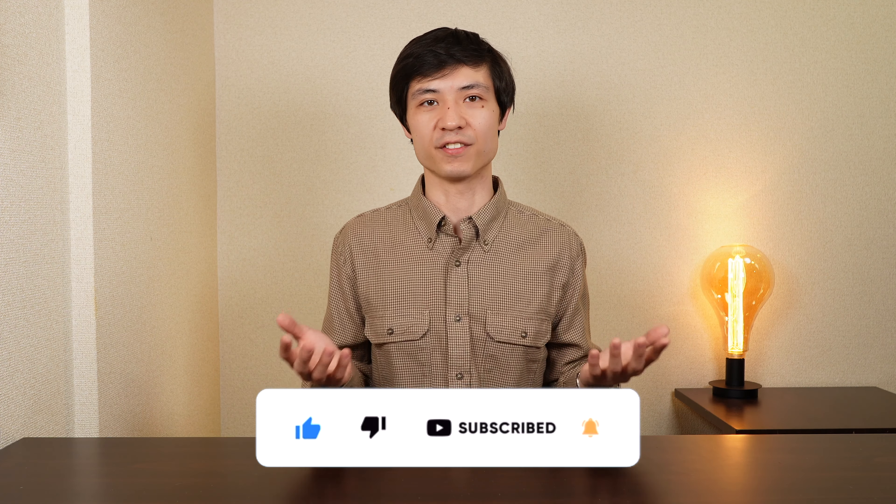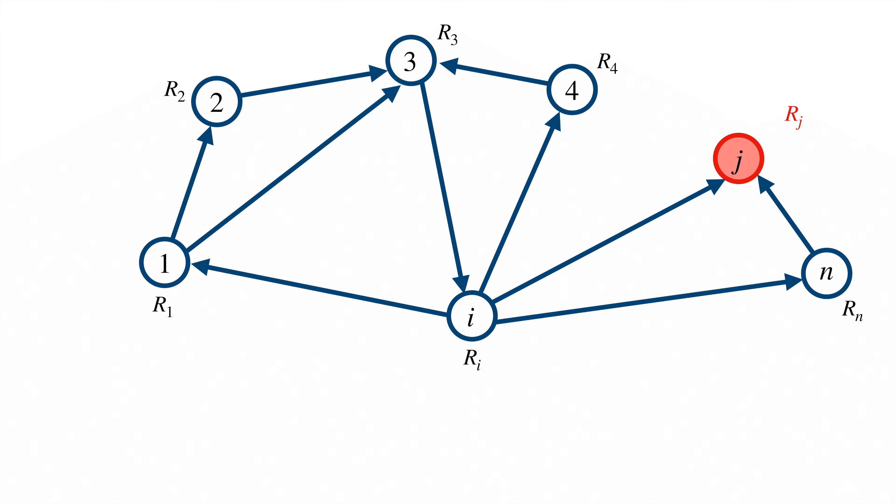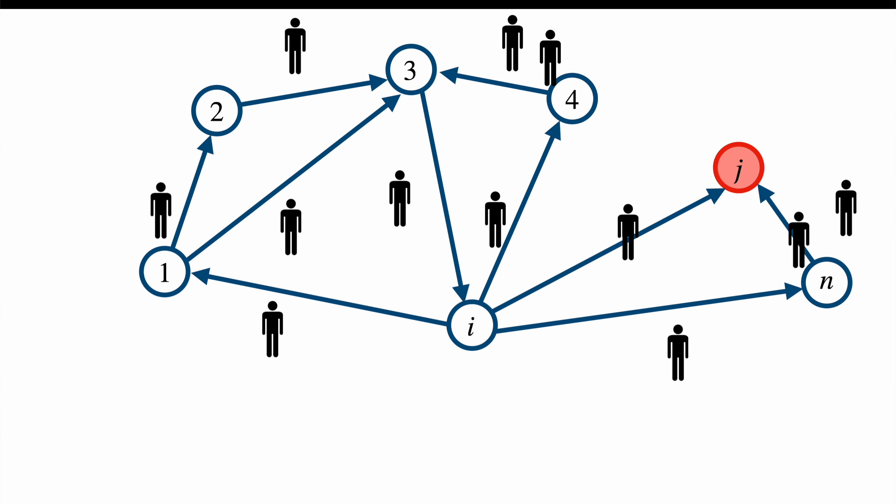Then each of these people will move from page i to one of the pages page i links to. In other words, if a page i has links toward di pages, it will send ri divided by di people to each of the pages and therefore, taking the perspective of page j, it will receive ri divided by di visitors from each page i that links to it. As a result, the total number of visitors rj of page j will be the sum of the ri di from all the i that links to j.